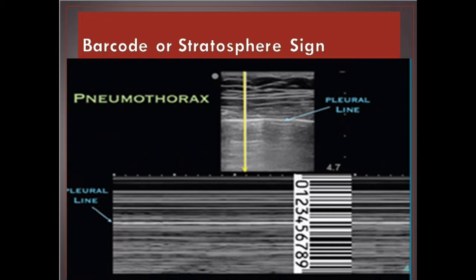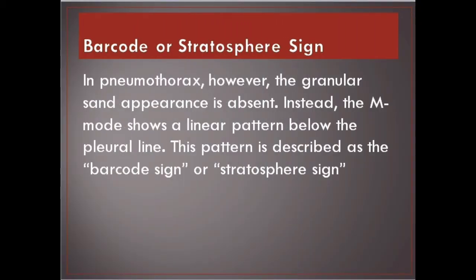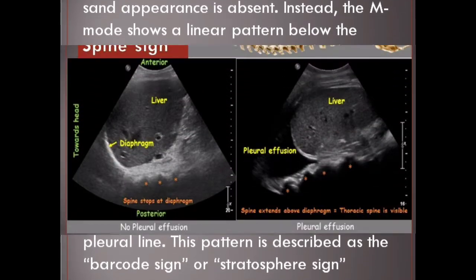Barcode or stratosphere sign. In pneumothorax, however, the granular sand appearance is absent. Instead, the M-mode shows a linear pattern below the pleural line. This pattern is described as the barcode sign or stratosphere sign.